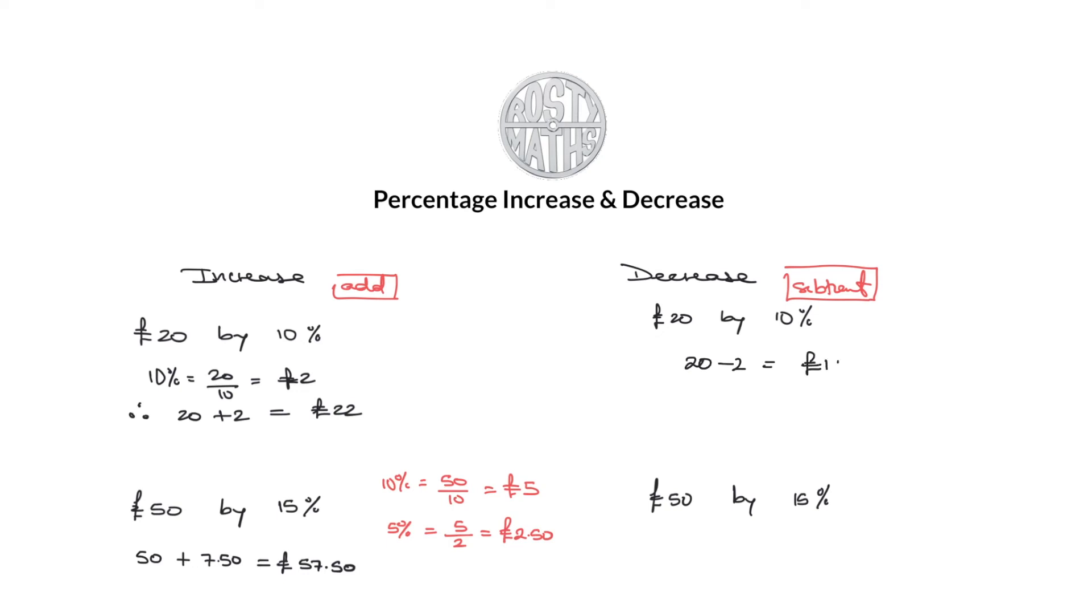Just the same with the question below. To decrease £50 by 15%, just take away that £7.50 that we had there and we're going to get £42.50.